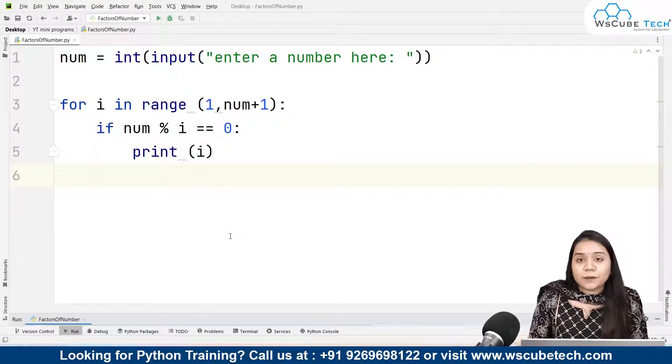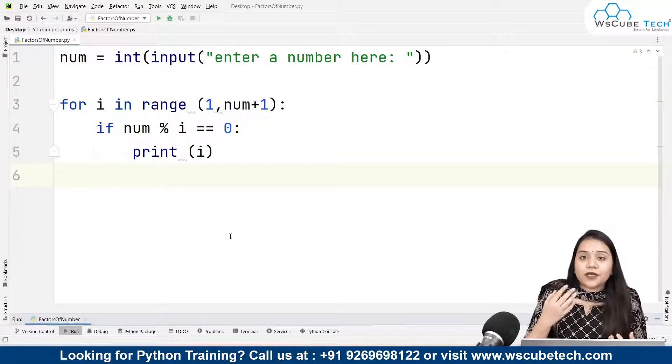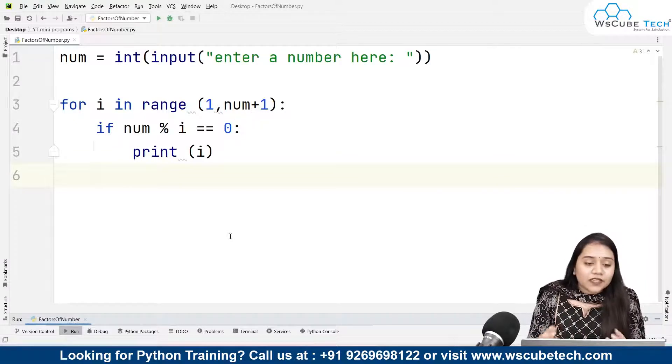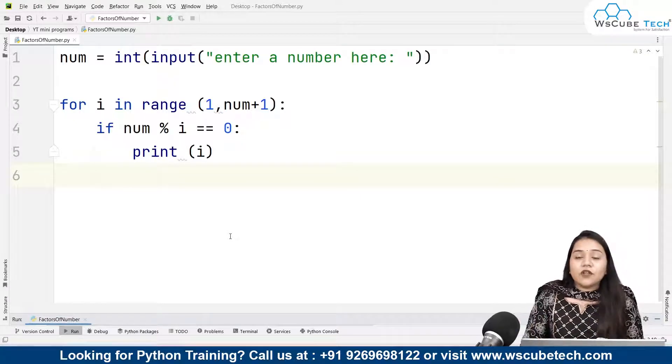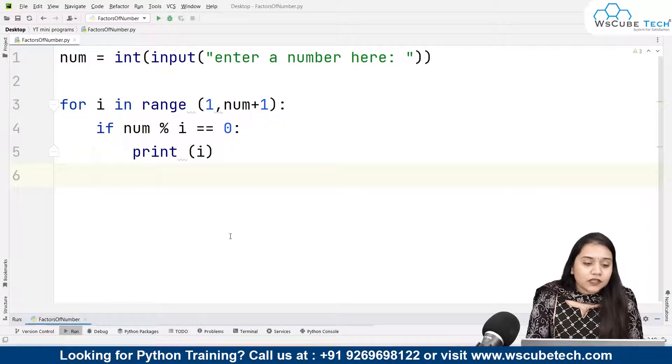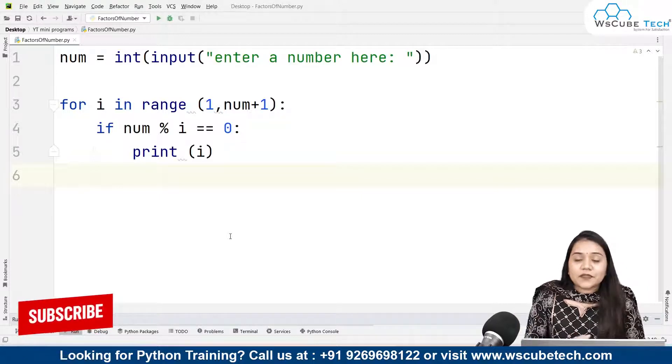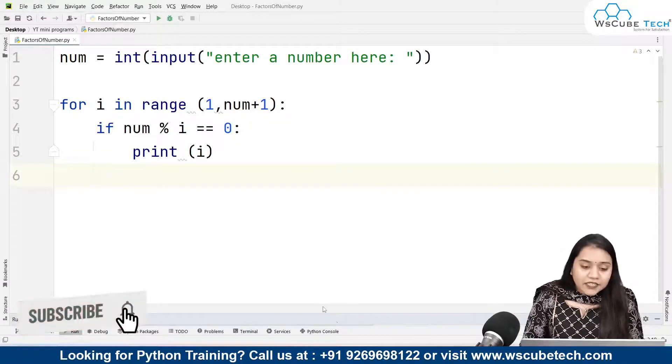We will check with each number that is there inside our range. If our number, suppose 12, when divided by 1, then 2, then 3, then 4, up to 12, gives the remainder 0, in that condition that number is a factor of our number. Lastly we will print it and get the output.